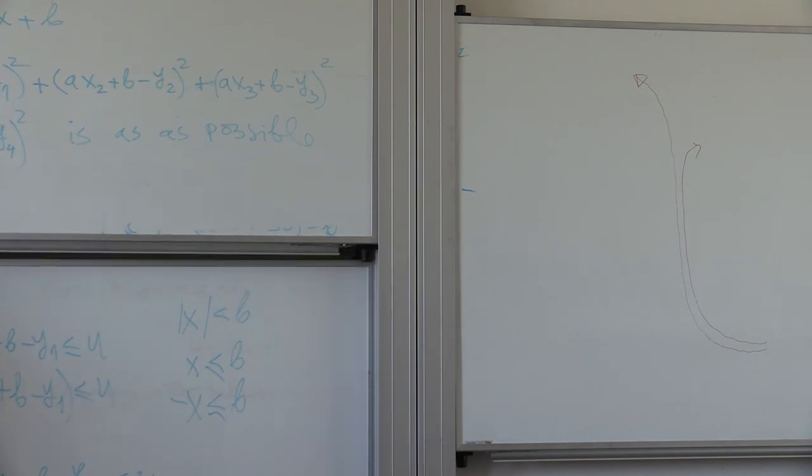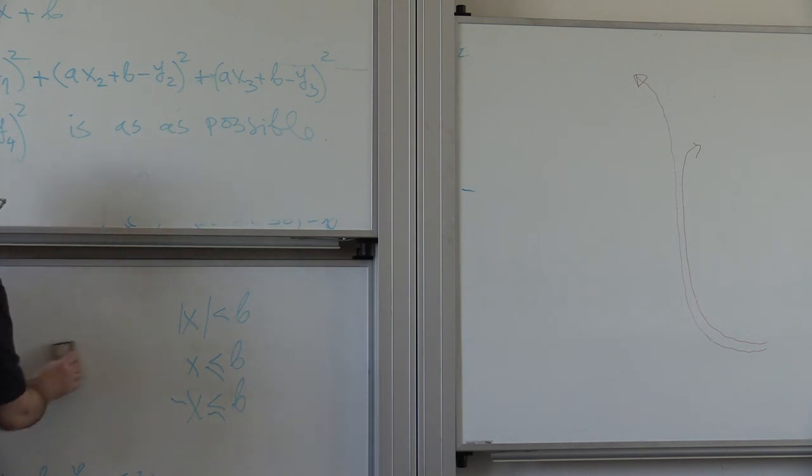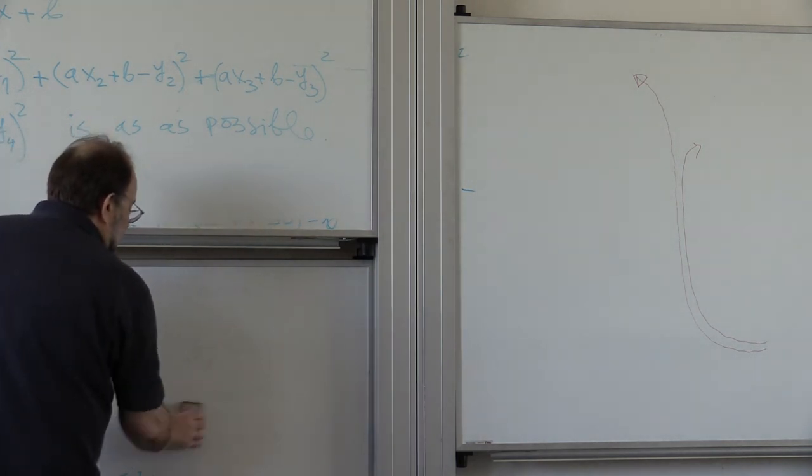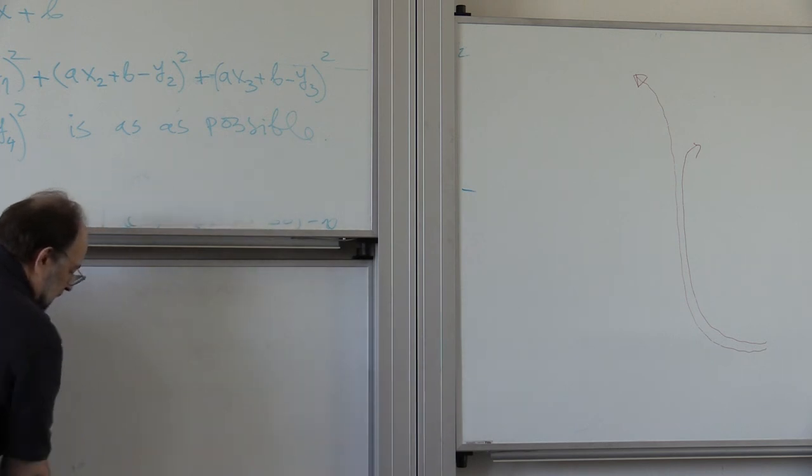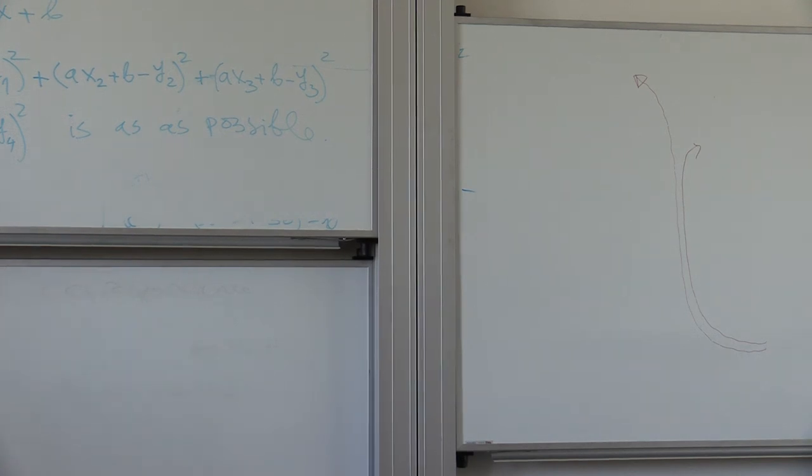And interestingly enough, this can also be reduced to a linear program. So, you see, the point is, this is one of the reasons why linear programming is so important. Because with the clever tricks, actually, you can extend it to a large number of prima facie non-linear problems. Problems that are actually reducible to linear optimization problems. And how do we do this, having seen this, what would you do? What would you introduce?